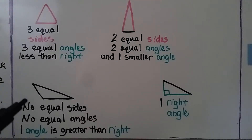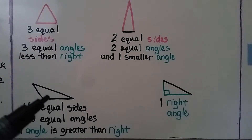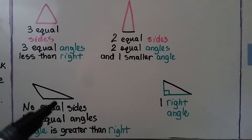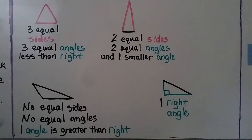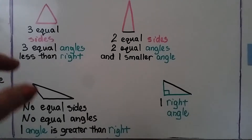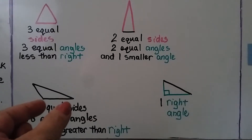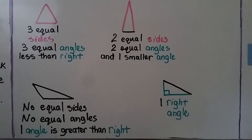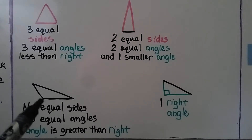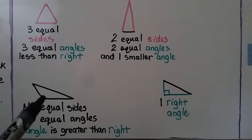This triangle has no equal sides — this length is shorter than this one and this one, and this one is shorter than this one. There are no equal sides or equal angles, but one angle right here is greater than a right angle. It's open more than a square corner.